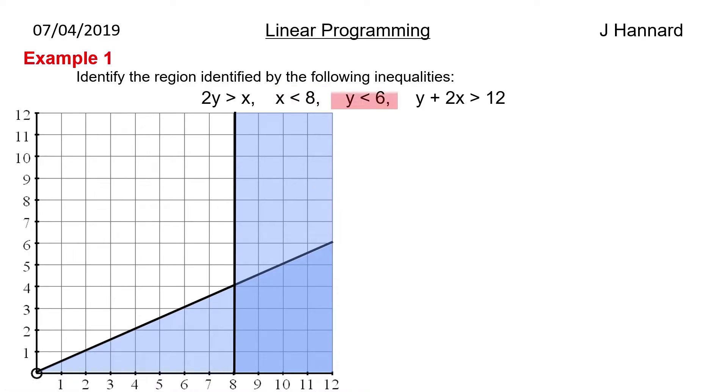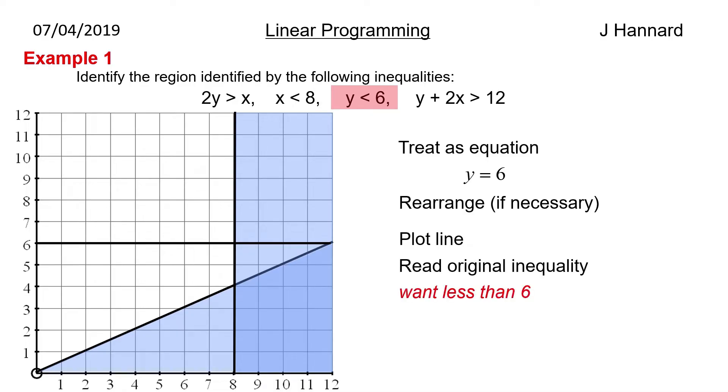Next then we have y is less than 6. So we then plot the line y equals 6. So that is just a horizontal line straight through 6 on the y axis. We then look at our inequality. We want less than 6. So that means we don't want greater than 6. So we shade greater than 6 which is up here.